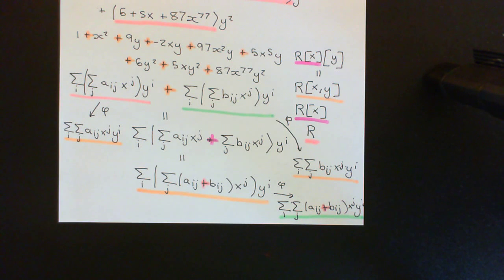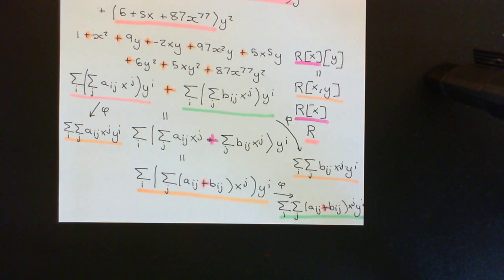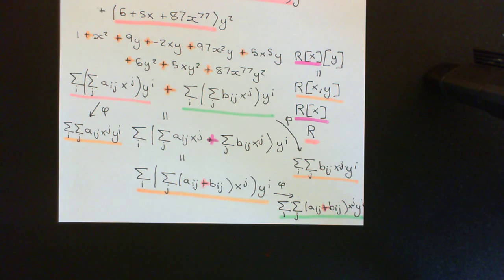Welcome back to this next video in which we are discussing polynomial rings in several variables. We are currently discussing polynomial rings in two variables, and we've seen that the formal definition of a polynomial ring in two variables is that it's a polynomial ring in a single variable, the variable y, where the coefficient ring is the ring of polynomials in the other indeterminate x over the ring R. The great advantage of this is that you instantly know it's going to be a ring, because it is just a polynomial ring in a single variable with a coefficient ring.